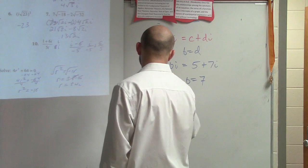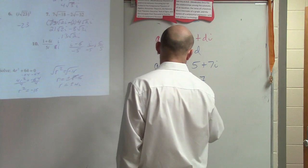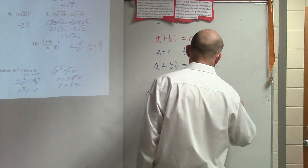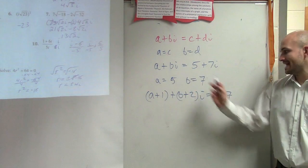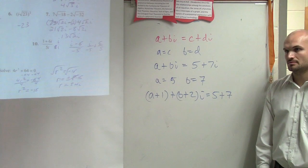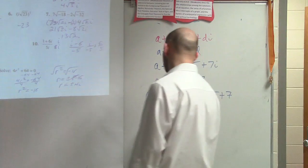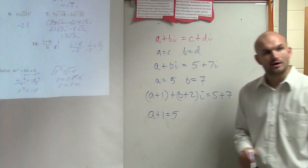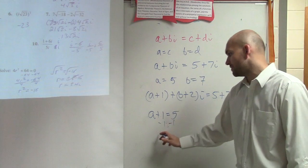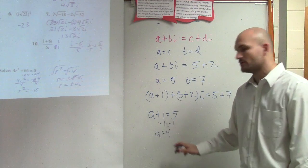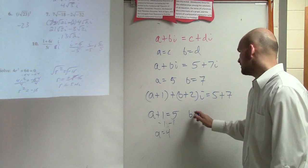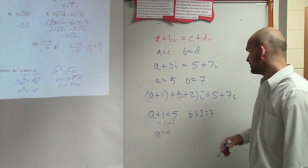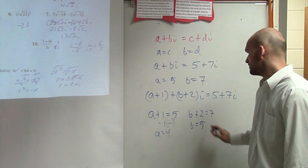Let's just step it up a notch. Now, what does A have to be for it to be equal? Four. You're going to set up the equation: A plus 1 equals 5, subtract 1, A equals 4. And then B — B plus 2 has to equal 7, so therefore B equals 5.